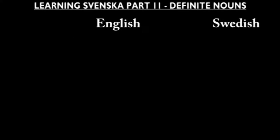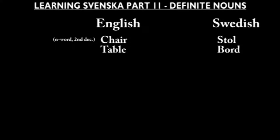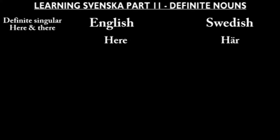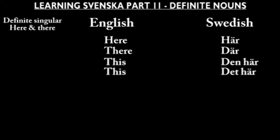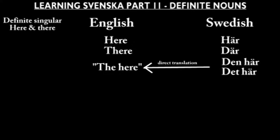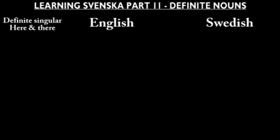Easy enough. Let's complicate stuff. For this section I'm going to use the two example nouns stol and bord, where stol is an n-word from the second declination and bord is a t-word from the sixth declination. Let's imagine a scenario where we would need to move around a bunch of chairs and tables, maybe to prepare for a dinner party, and use this to look at the words for this, that, here, there, these and those.